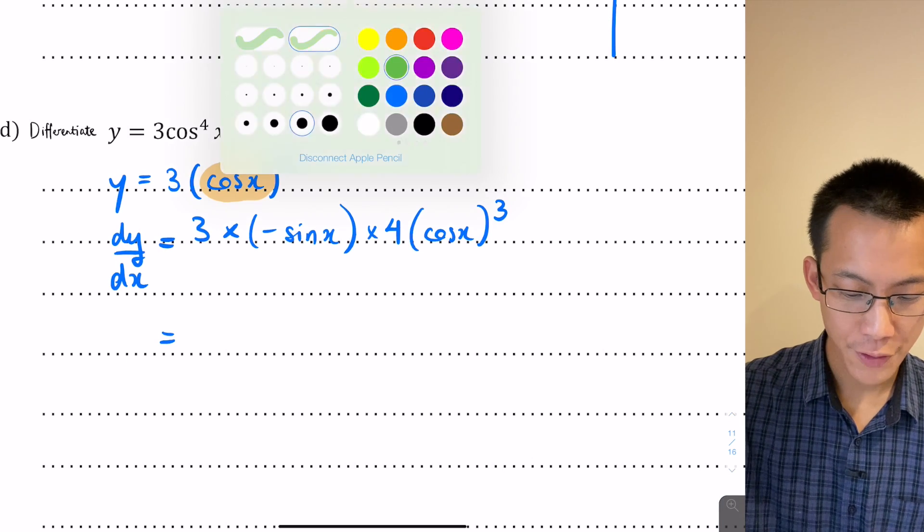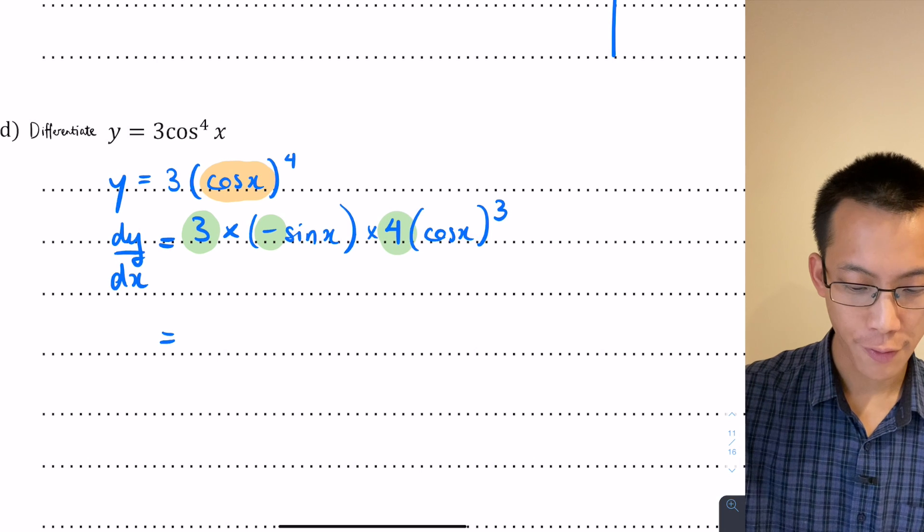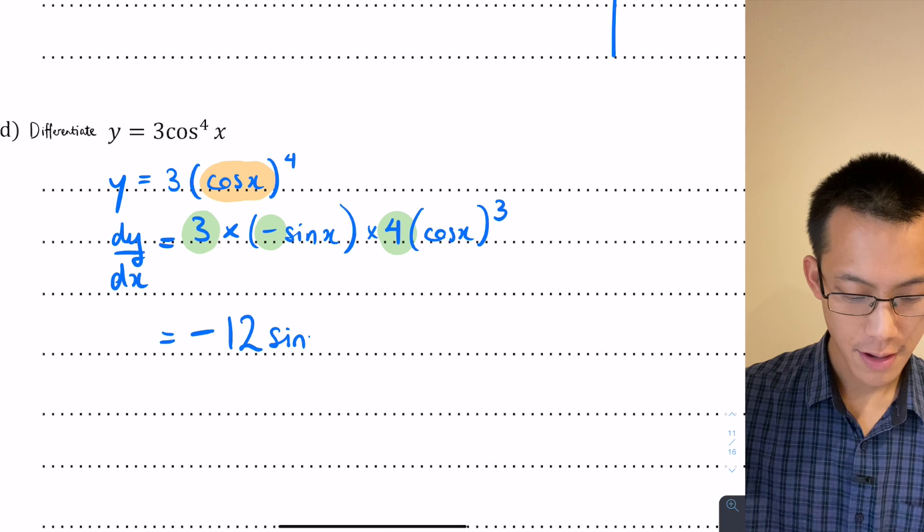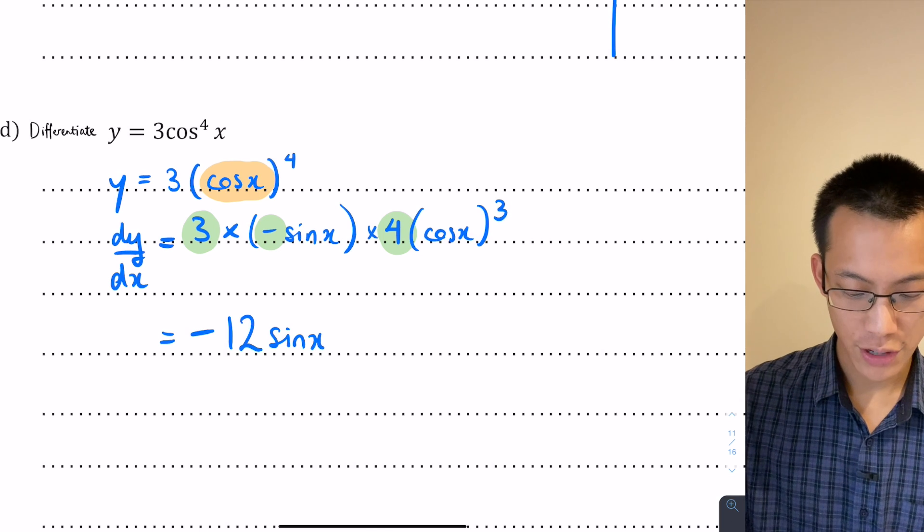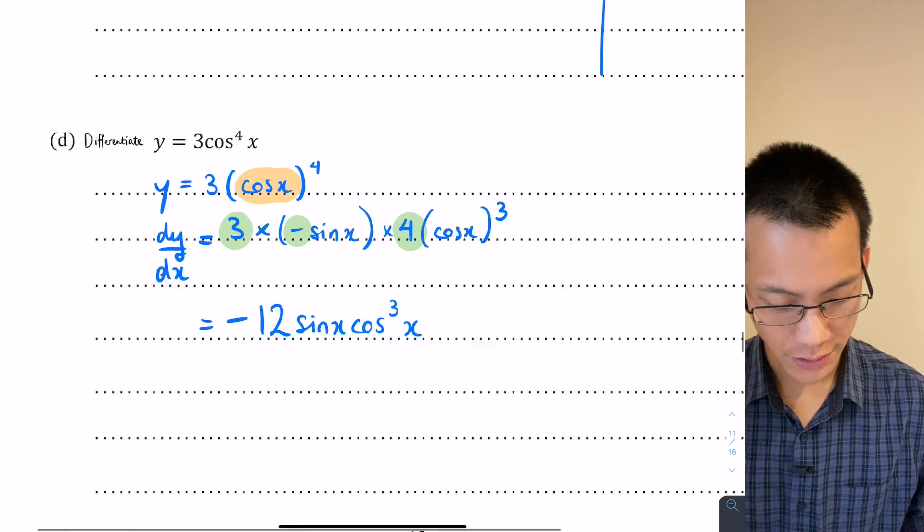So there's my differentiation, and I'm just going to now tidy it up a little bit. I can see that I've got, in terms of constants, I've got a 3, a negative 1, and a 4. So they combine into negative 12. And then I've got sine x, cos x cubed, which I can write as cos cubed x. That's the derivative.